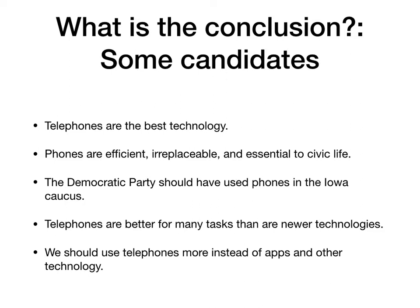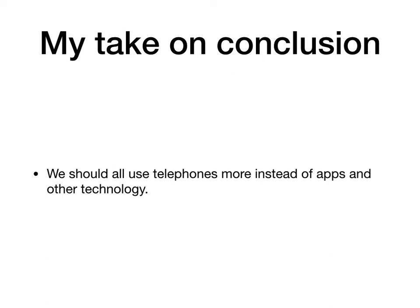A lot of times, especially with longer extended arguments, you might see a few different things that could be the conclusion, or nothing that quite wraps it up. In figuring out the conclusion, one thing that is super helpful is to ask yourself: what does this person want us to do, what do they want us to believe? If they want us to change our behavior in a certain way — which he does, he wants us to use phones more — that will usually help us zero in on the conclusion. So that's my take: we should all use telephones more instead of apps and other technology.